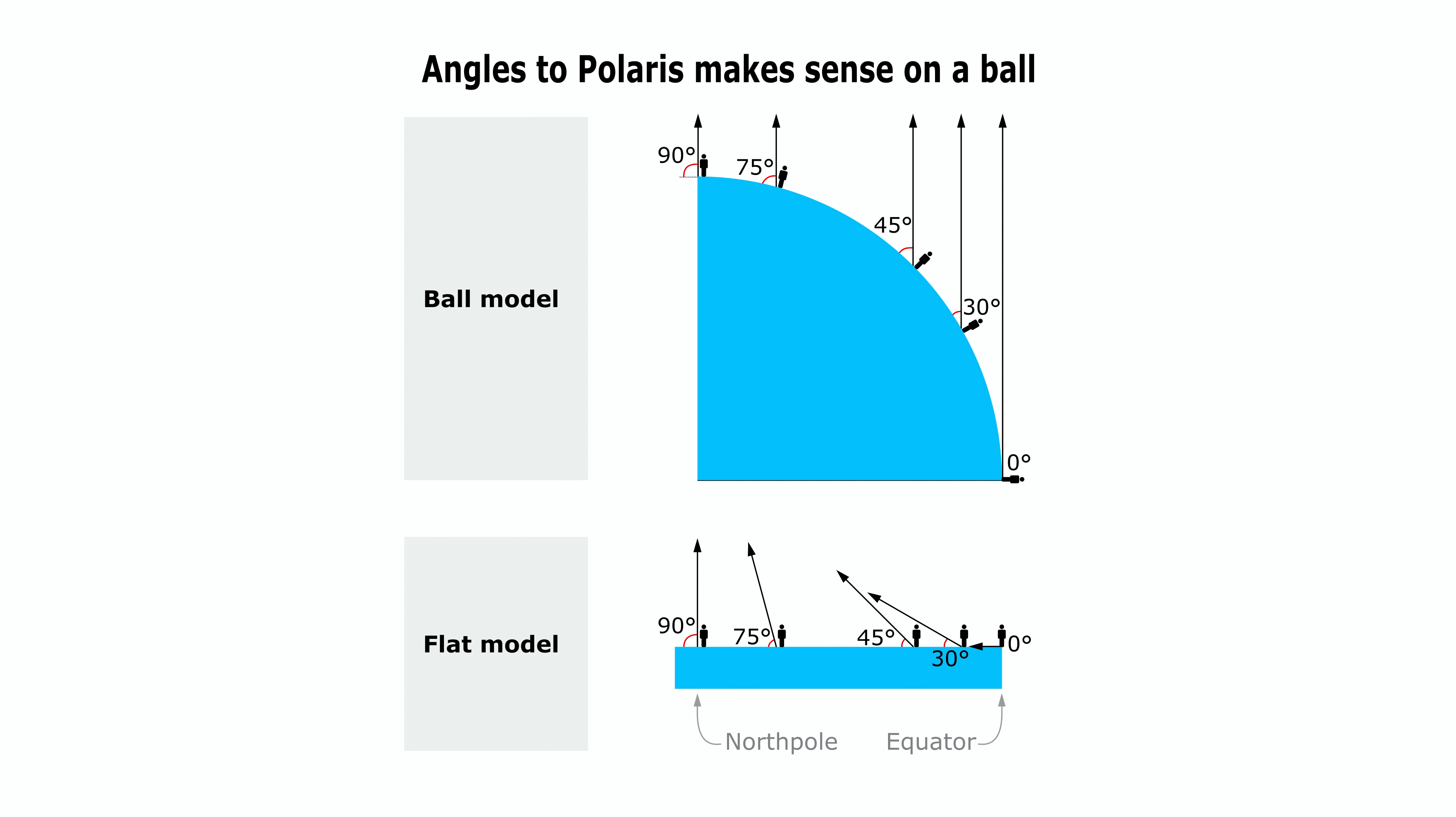Polaris is more than 400 light years away, so any light from it will be parallel lines when hitting the Earth. If we can prove that the angle up to Polaris is as the top model indicates, then you can see, in the bottom, that Team Flat Earth is in trouble, as these angles do not point in the same direction. If we extend the directions, they do not point to a single point as believed.